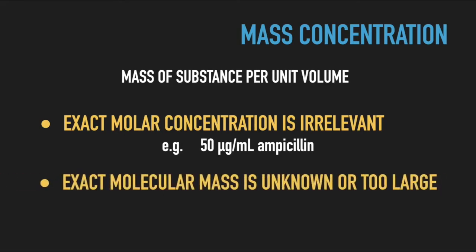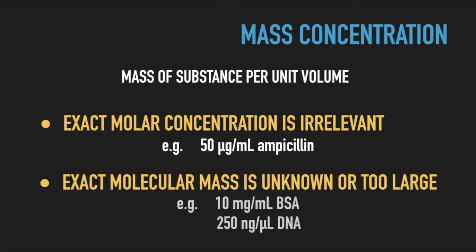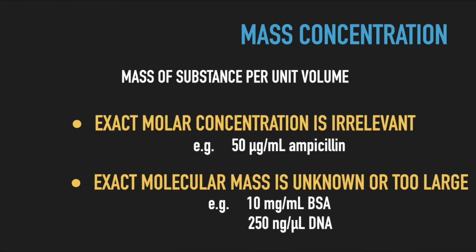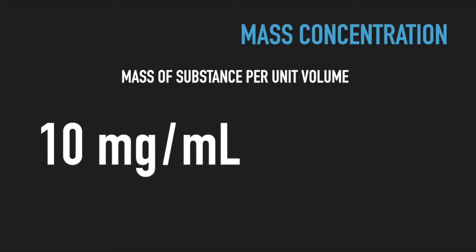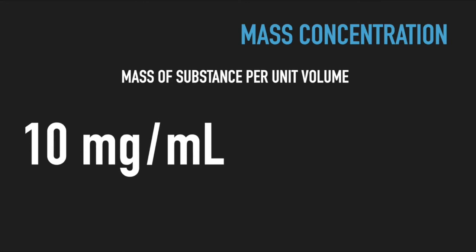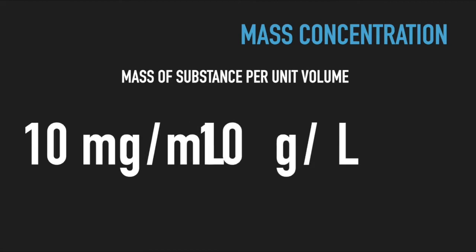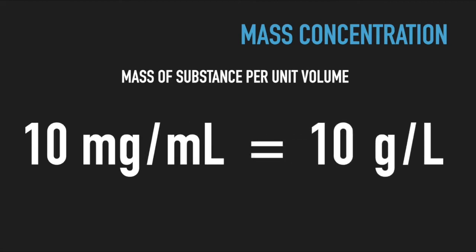We also use mass concentration when the molecular weight of the substance is unknown or too large. For example, the exact molecular weight of protein or DNA molecules depends on the exact sequence and varies from thousands to millions of daltons. It is therefore easier to express protein and DNA concentration as mass per unit volume. Remember that mass concentration refers to the weight of a substance in the indicated volume — a concentration of 10 mg per ml means every milliliter contains 10 mg. Therefore, 10 mg per milliliter, 10 micrograms per microliter, or 10 g per liter all refer to exactly the same concentration.